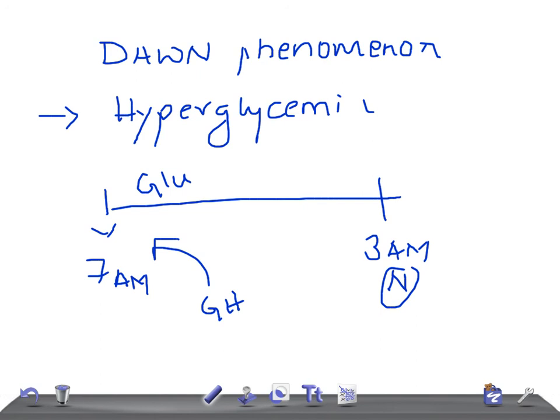What's the treatment for Dawn phenomenon? The treatment is to increase the NPH to prevent early morning hyperglycemia. Look at the differences between Somogyi and Dawn phenomenon — they are totally different. Early morning they both present with the same high glucose level, but the treatment is totally different. If you give more NPH for Somogyi effect, that is very dangerous — the patient will go into severe hypoglycemia. For Dawn phenomenon, you have to give NPH. You should not lower the NPH, as that will lead to hyperglycemia.